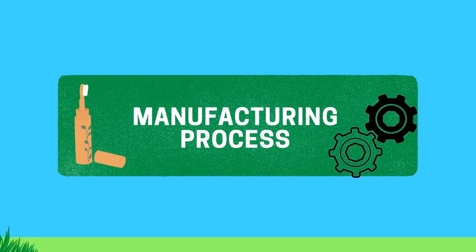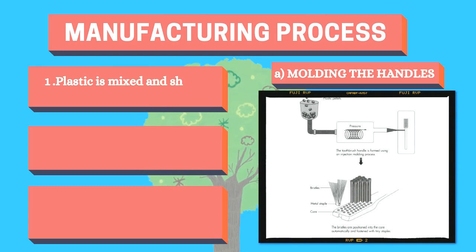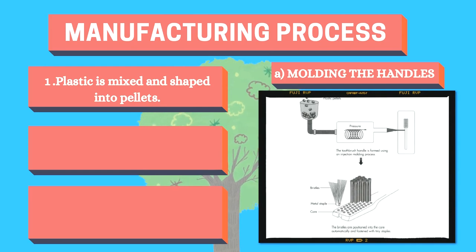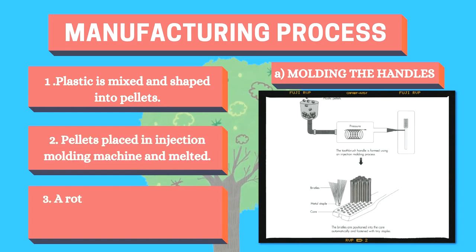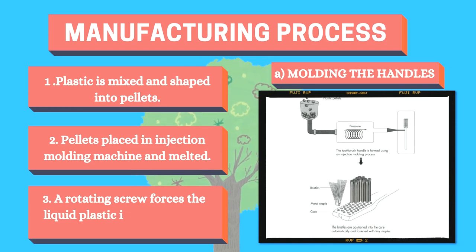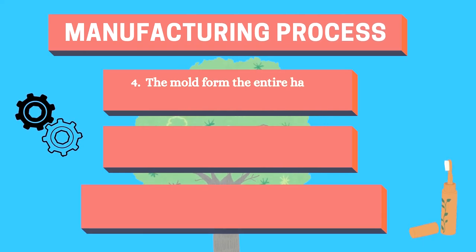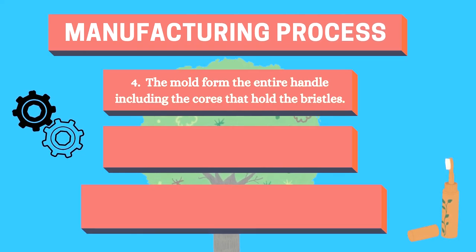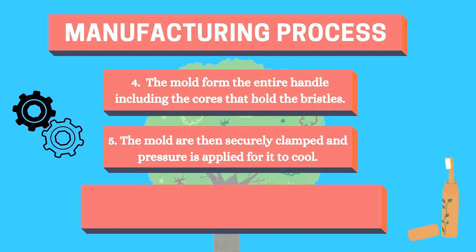The manufacturing process consists of several main steps. The first step is to mold the handle — plastics are mixed and shaped into pellets, which are then placed in an injection molding machine and melted. A rotating screw forces the liquid plastic into the handle mold, which forms the entire handle including the cores that hold the bristles. The molds are then securely clamped and pressure is applied for cooling.